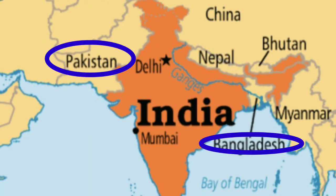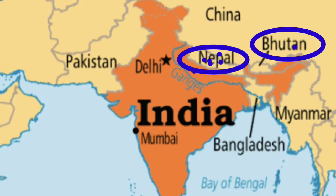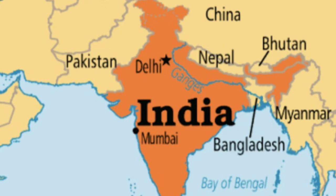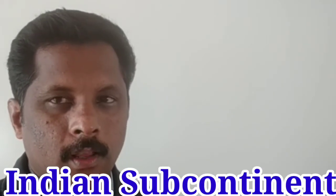India along with its neighboring countries — Pakistan, Bangladesh, Bhutan, Nepal, Sri Lanka, and the Maldives — is called the Indian subcontinent. It is called so because it has the features of a continent: a well-defined geographical feature, and it is peninsular.